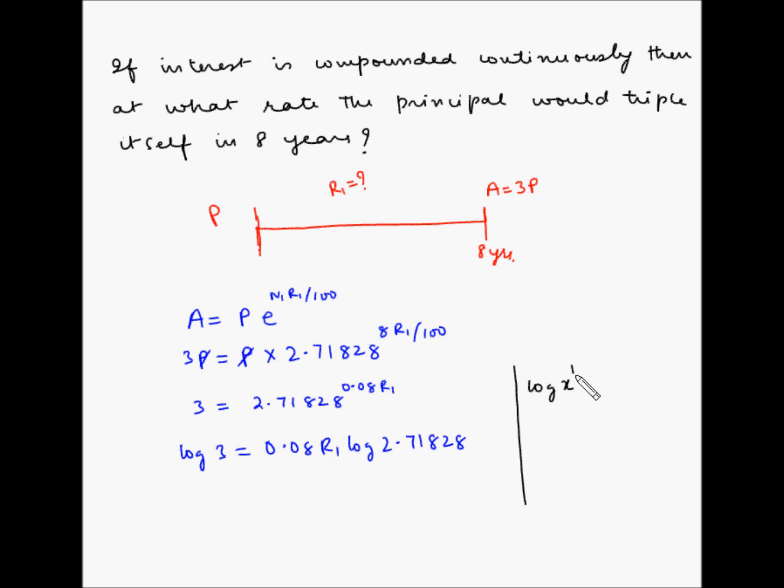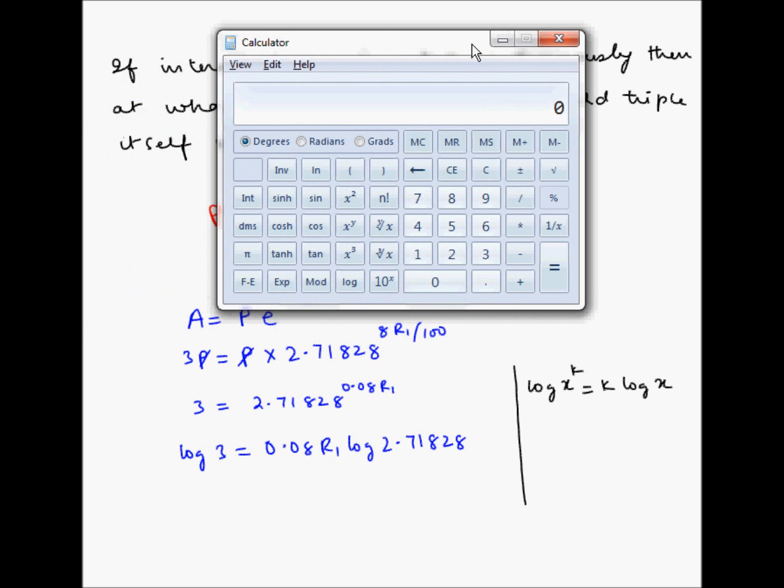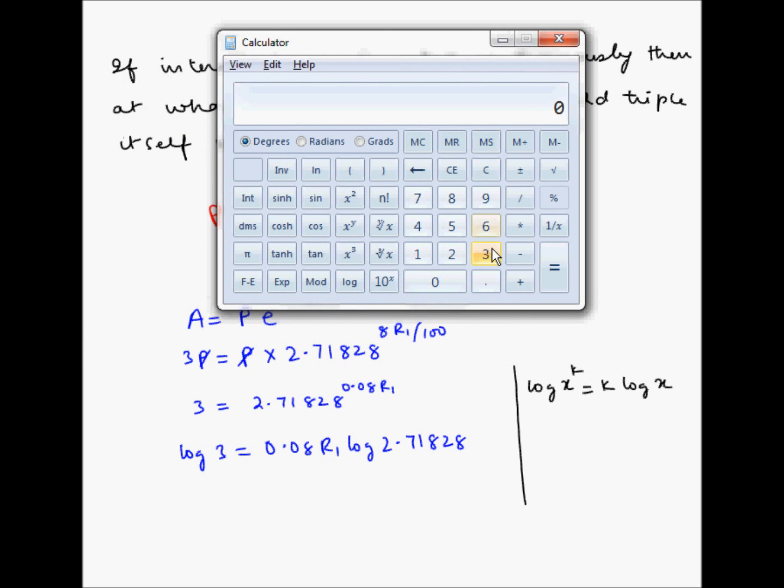Here we have used the concept which says log of x to the power k is equal to k log x. So x is 2.71828 and k is 0.08 R1, so our expression became 0.08 R1 multiplied by log of 2.71828. Let me pull my calculator here, so log 3, this is 0.477.